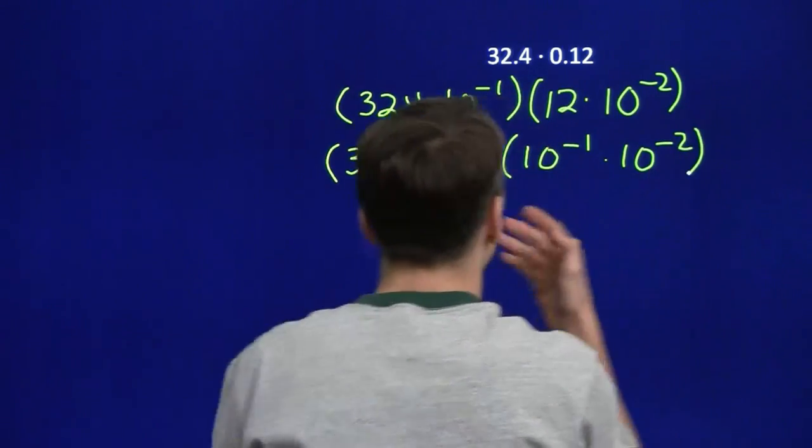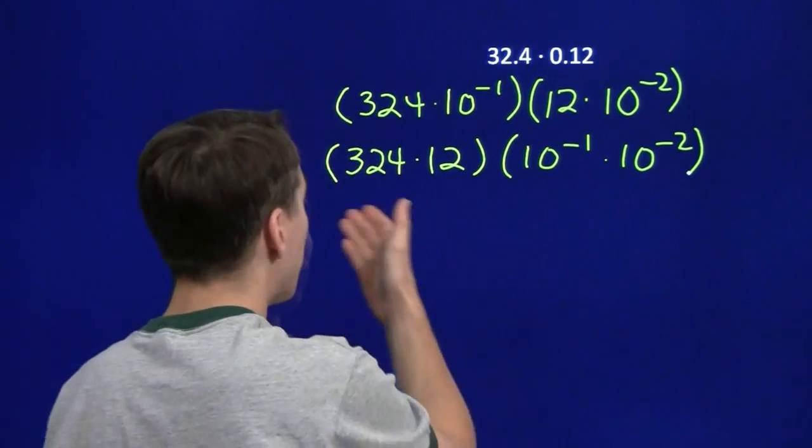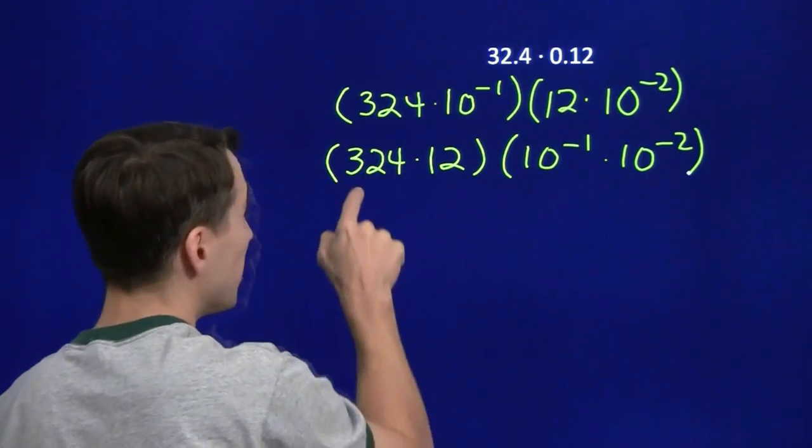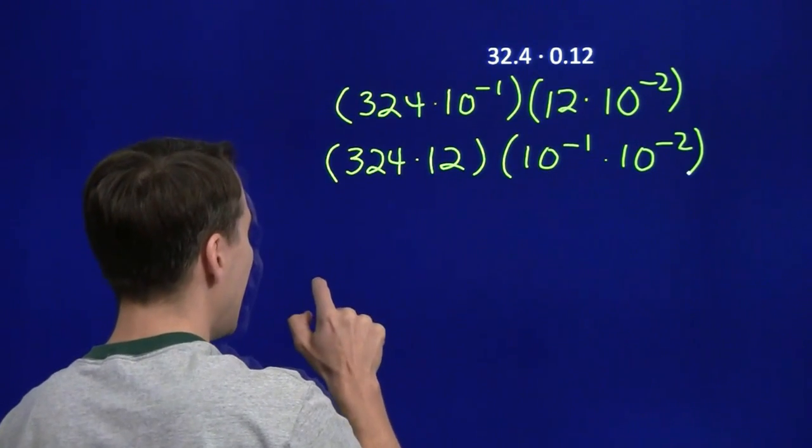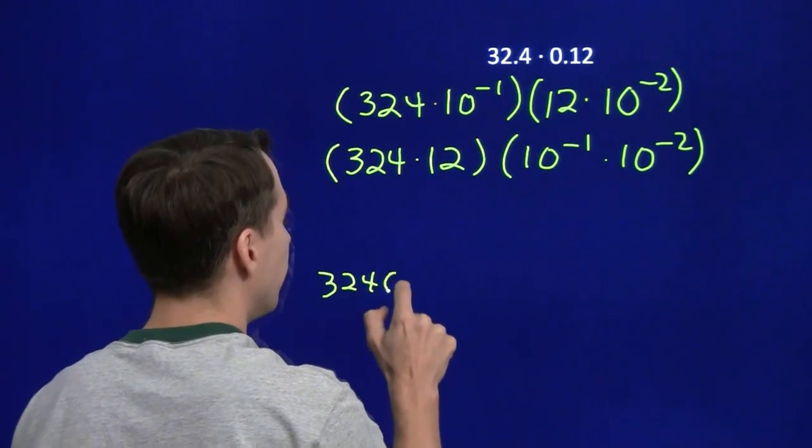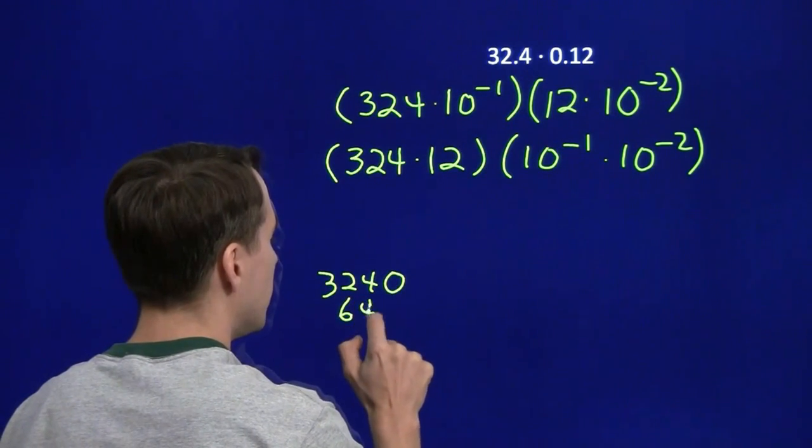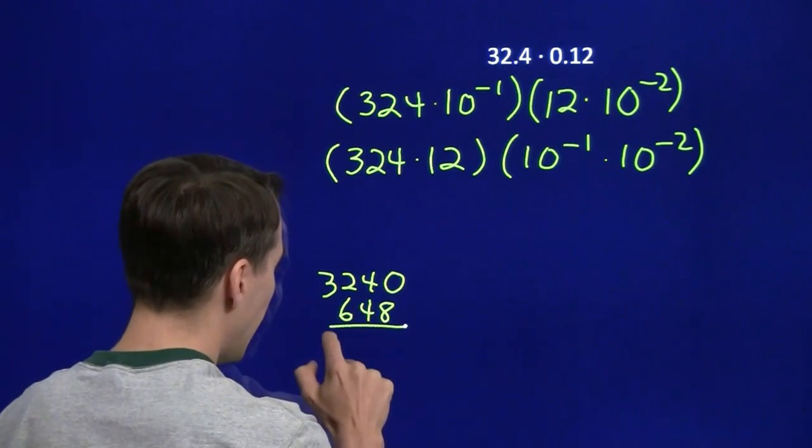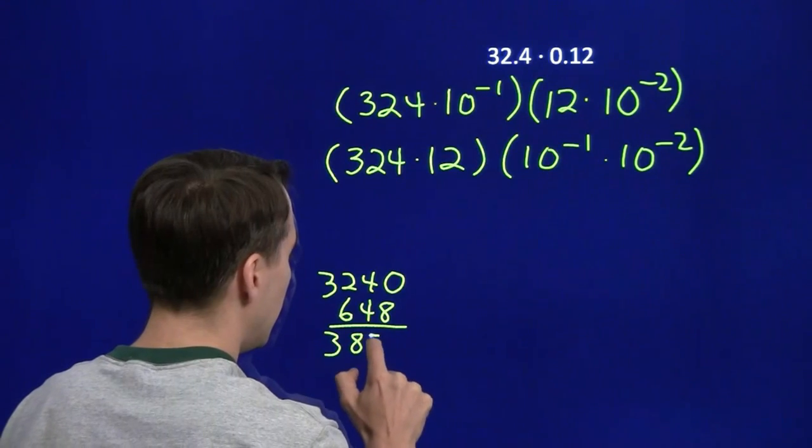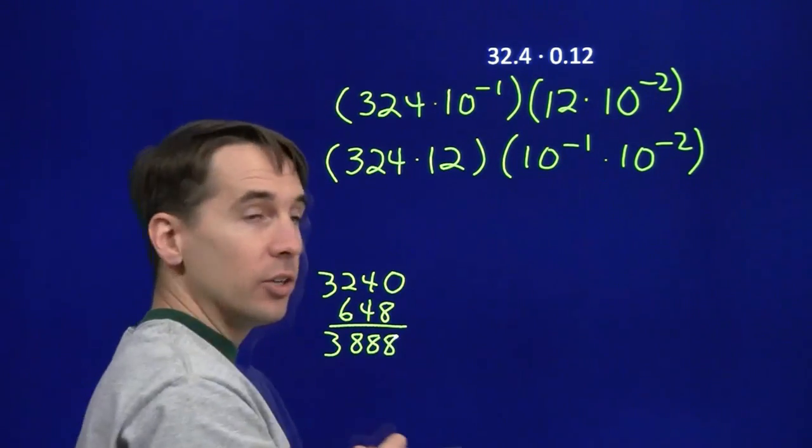We'll take care of the integers first. We'll use a little distributive property, 324 times 12, that's 324 times 10, which is 3240, plus 324 times 2, which is 648. Then we add those up, and we get 3888.